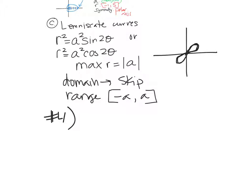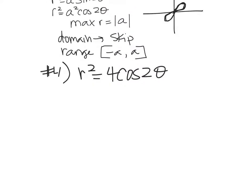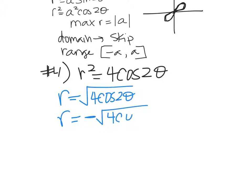Number four: R squared equals 4 times the cosine of 2 theta. To graph these you have to enter two equations: R equals the square root of 4 cosine 2θ, and R equals negative square root of 4 cosine 2θ. You can't plug in R squared — these are all R equals. I had to solve for R by taking plus and minus the square root of both sides. Otherwise you're just going to get one half of it and you need two.